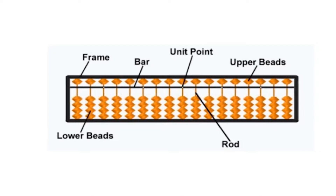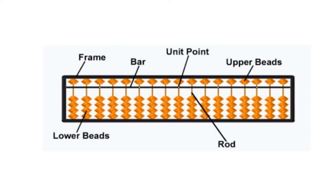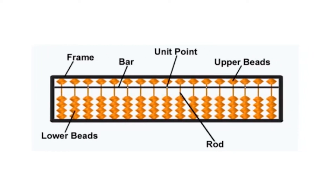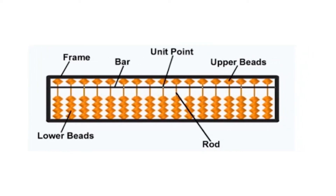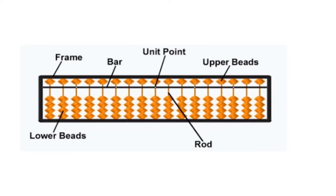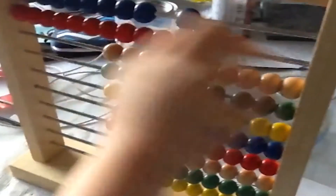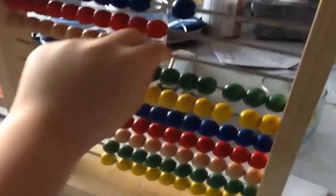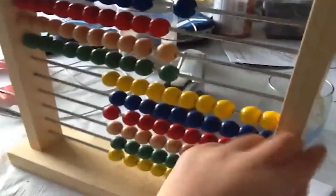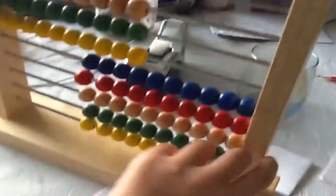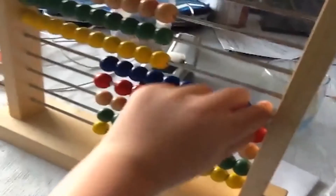Setting: The process of moving a bead of the lower Abacus or the upper Abacus towards the separation bar is called setting. Clearing: The process of moving a bead away from the separation bar, either towards the top of the upper Abacus or the bottom of the lower Abacus, is called clearing.